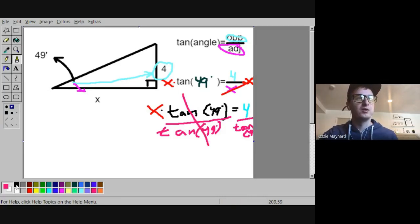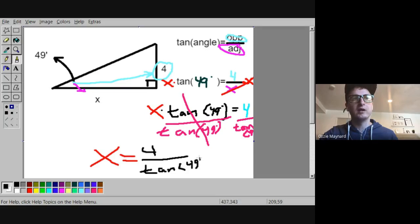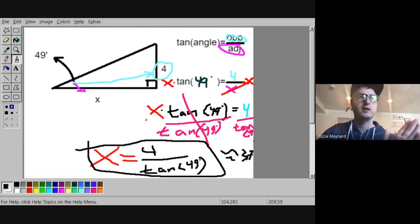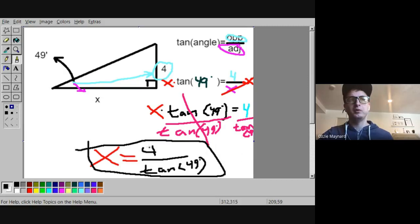So your final answer should be x is equal to 4 divided by the tangent of 49 degrees. This is what you want your final answer to be. This is called your exact answer. If you wanted to put this in your calculator, then you should be getting an answer of approximately like 3.7, I guess. I'm just guessing just by looking at the triangle. But the answer that's acceptable on your quiz and test is going to be this. This is called your exact answer.